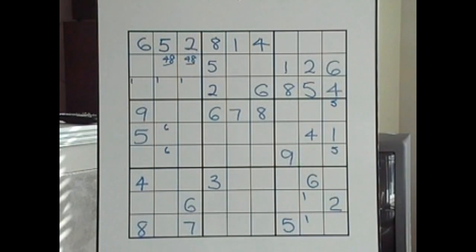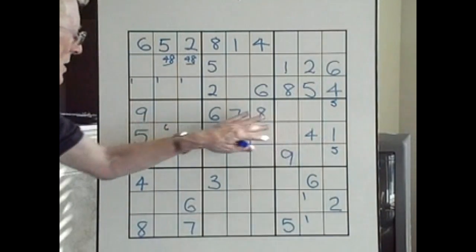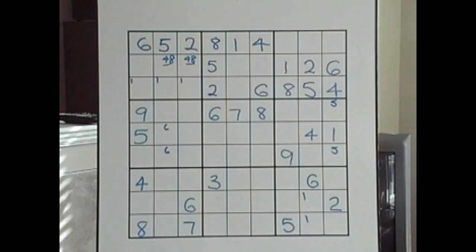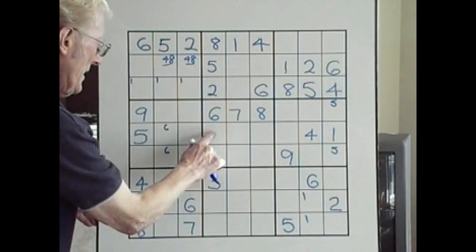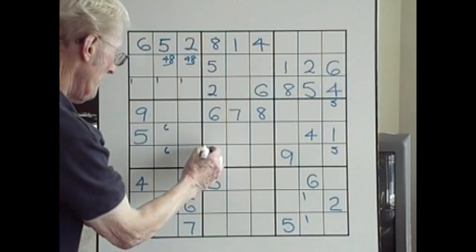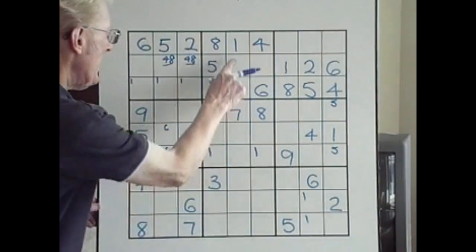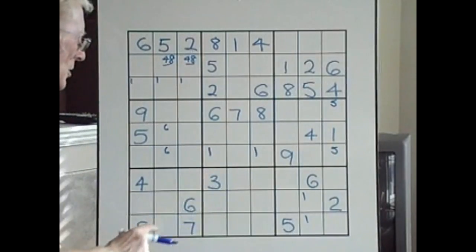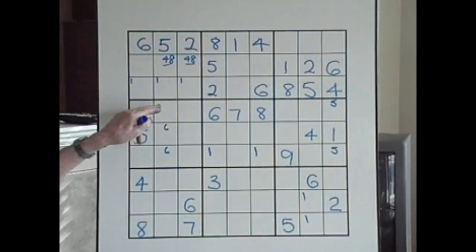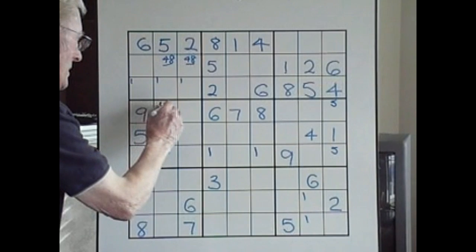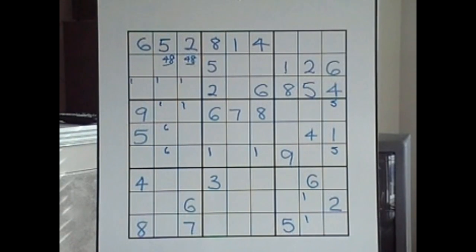Nines — there's no nines, let's leave it. Go to this set of blocks. Ones — we know for a fact that a one cannot be in this block there, there, or there. It has to be either there or there because of that one cancelling this one out. So if you have a middle, you have a bottom, there has to be a top — so one of these can be a one. Let's go on.